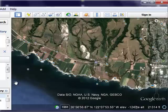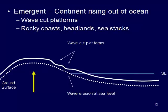In those emergent coastlines where the continent is rising out of the ocean, we get wave cut platforms, rocky coastlines, headlands, and sea stacks. If we start out with our continent at a certain surface level and force the ground surface up and out of the ocean, we take that surface that was once being eroded by waves and raise it up above sea level. In this picture, we've had two events where the continent has been pushed upwards, pulling those wave cut platforms up out of the ocean.